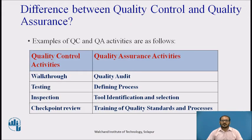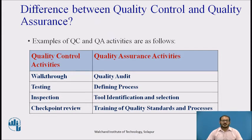The quality control activities include walk-throughs, testing, inspection, and checkpoint reviews. Quality assurance activities include quality audits, defining processes, defining standard processes, tool identification and selection, and training on quality standards and processes. These activities concern quality control and quality assurance for any product, not just software. With respect to software, quality assurance becomes software quality assurance and quality control becomes software testing.